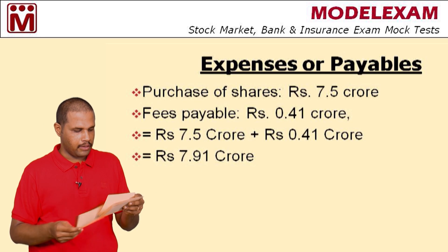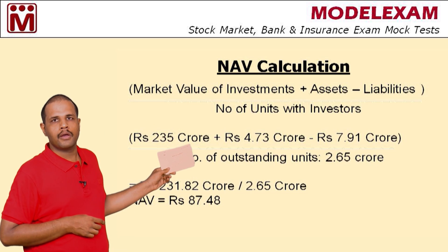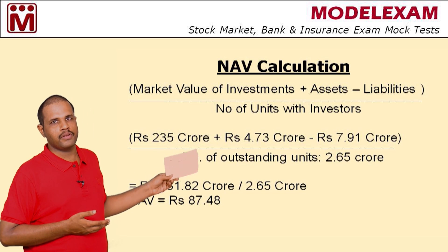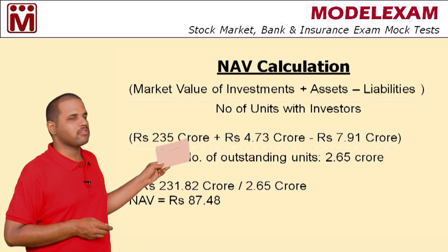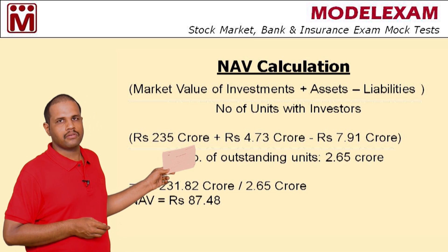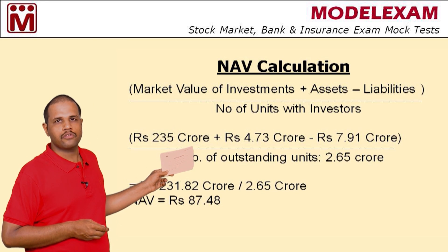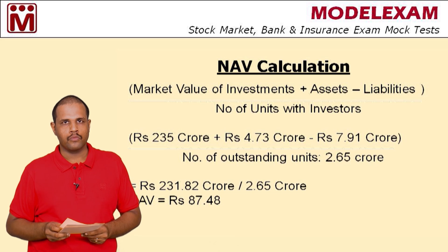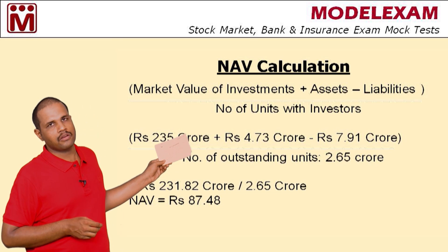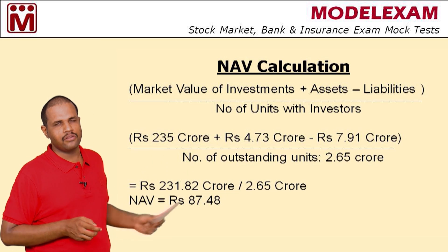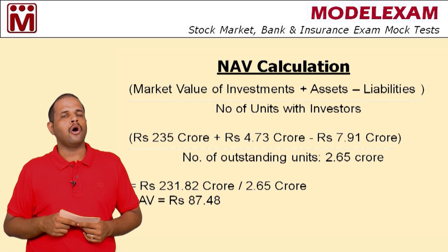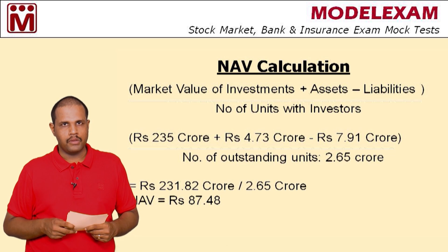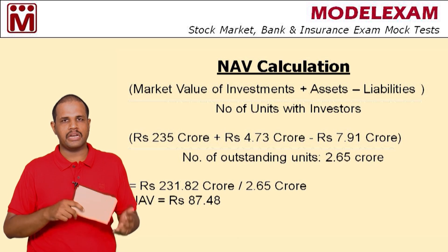The formula is: market value of investments plus assets or receivables minus liabilities or payables, divided by number of units. Market value of investments: Rs. 235 crore. Assets: Rs. 4.73 crore. Liabilities: Rs. 7.91 crore. Number of units: 2.65 crore. Applying these values, the NAV is Rs. 87.48 — this is the net asset value or current market price for this case study. We will see one more problem, which is quite different, in the next slide.